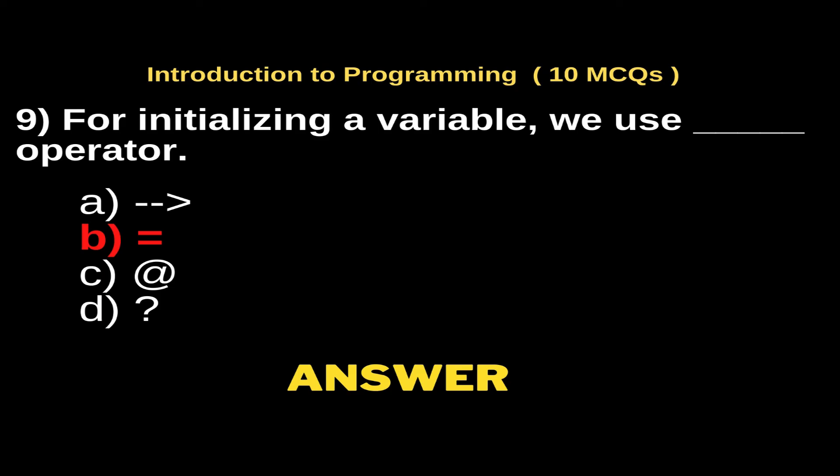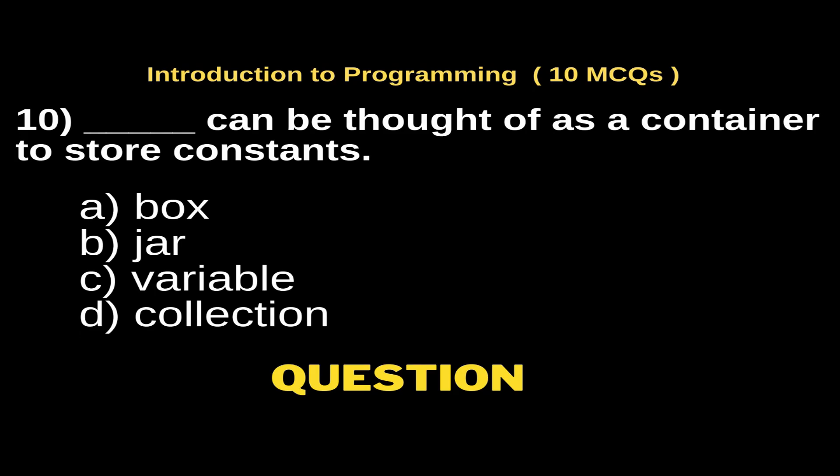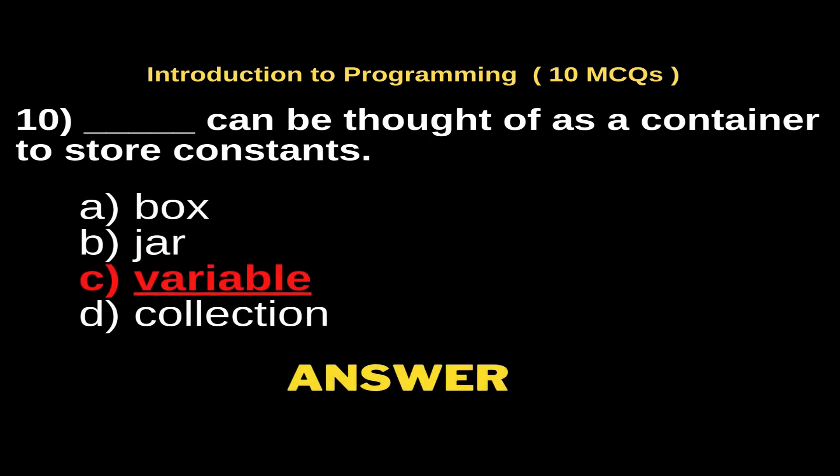Dash can be thought of as a container to store constants. Options: Option A, box; Option B, jar; Option C, variable; Option D, collection. And the right answer is Option C, variable.